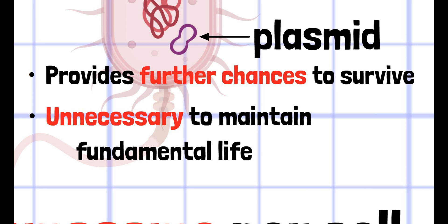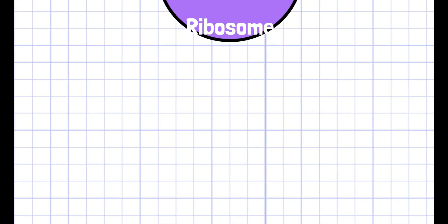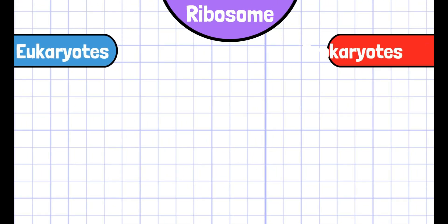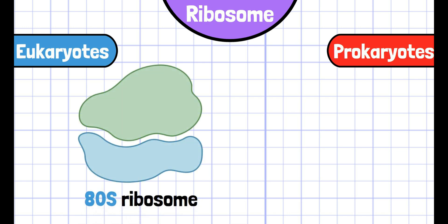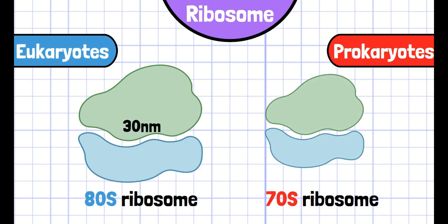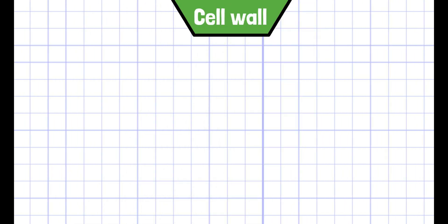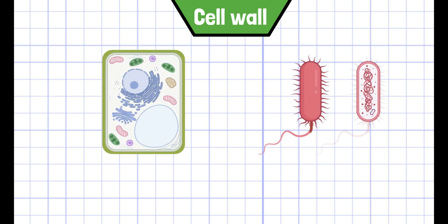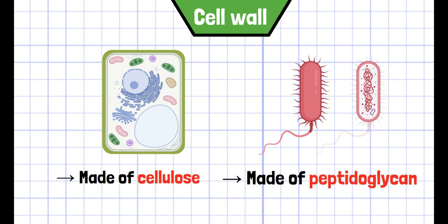There are also some common structures that potentially have similar functions between eukaryotes and prokaryotes, but their composition often differs. Ribosomes and cell walls are the examples. Both eukaryotes and prokaryotes have ribosomes, which are the site of protein synthesis, but their size is different. Eukaryotic ribosomes are known as 80S ribosomes with a diameter of approximately 30 nm, and prokaryotic ribosomes are known as 70S ribosomes with a diameter of 20 nm. All prokaryotes and plant cells have a cell wall, but the composition differs slightly: plant cell walls are composed of cellulose, whereas prokaryotic cell walls are composed of peptidoglycan.